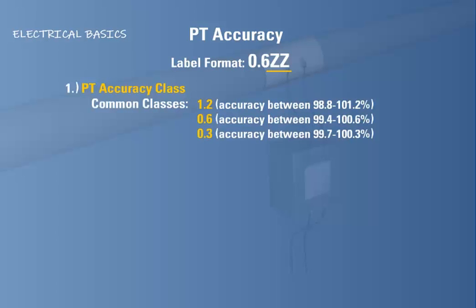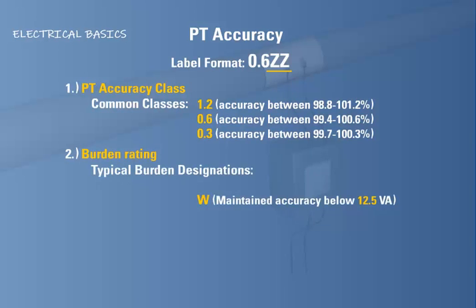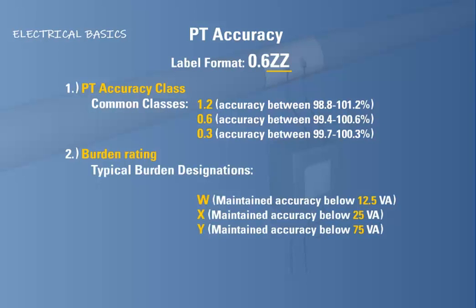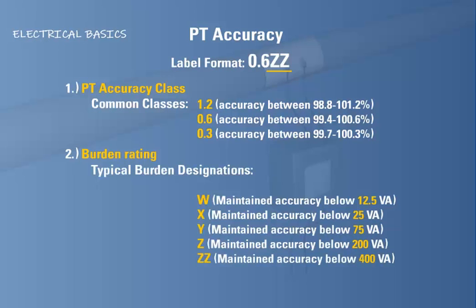The next character in the label is a letter designating the burden rating. The typical burden designations are as follows: the W rating indicates the PT will operate accurately as long as the burden doesn't exceed 12.5 volt amperes; the X rating, 25 volt amperes; the Y rating, 75 volt amperes; the Z rating, 200 volt amperes; and the ZZ rating, 400 volt amperes. If at any time the burden exceeds the PT's rating, the accuracy classification will be compromised.